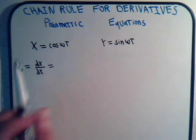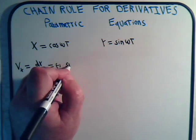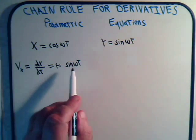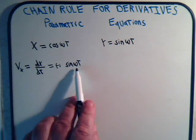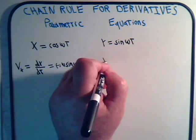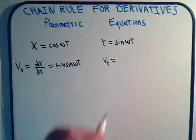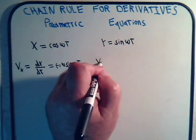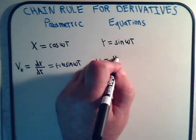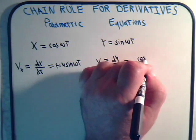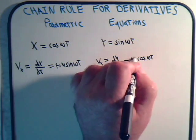The derivative of cosine of ωt is minus the sine of ωt, and then we take the derivative of what's inside, which is ω, so vx equals minus ω times the sine of ωt. And vy — that would just be dy/dt, and that will equal the cosine of ωt times ω.